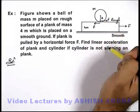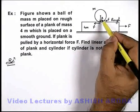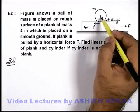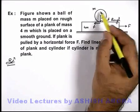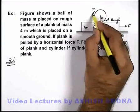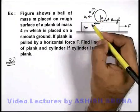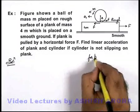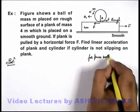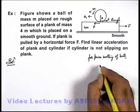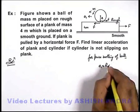The cylinder is not slipping on plank, that means it is in pure rolling. Then for the case of pure rolling we can state it will be moving with respect to plank in backward direction with an angular acceleration alpha and an acceleration a1. And for pure rolling of ball, which we can treat as a sphere, we can write a1 equals r alpha.